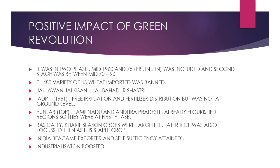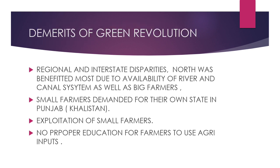We became the exporter of commodities and attained self-sufficiency. We attained self-sufficiency and then became the exporter of commodities. We also used industrialization to our benefit. However, regional inter-disparity remained a problem, with financial conditions not good in the south compared to the north, and rich farmers being the primary adopters of new technology.